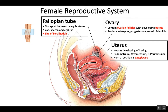The uterus is a muscular organ. It contains a layer of smooth muscle and houses the developing offspring, so this is where most of the embryonic and fetal development occurs. The uterus has three layers: the inside layer is known as the endometrium, the muscular layer is the myometrium, and the outer layer is the perimetrium.